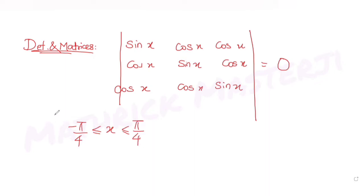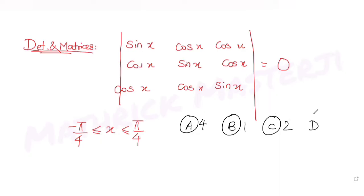The answer choices given are: option one is four, option two is one, option three is two, and option four is three. We need to figure out which one is the correct answer.